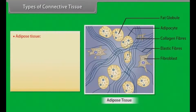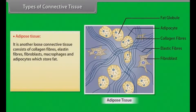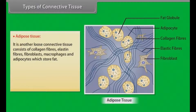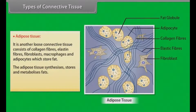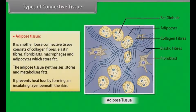Adipose tissue is another loose connective tissue. It consists of collagen fibers, elastin fibers, fibroblasts, macrophages, and adipocytes which store fat. The adipose tissue synthesizes, stores, and metabolizes fats. It prevents heat loss by forming an insulating layer beneath the skin.